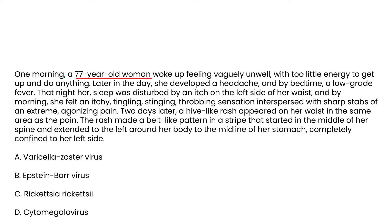Clinical vignette one: A 77-year-old woman woke up feeling vaguely unwell, later developed a headache, and by bedtime a low-grade fever. That night her sleep was disturbed by an itch on the left side of her waist, and by morning she felt an itchy, tingling, stinging, throbbing sensation interspersed with sharp stabs of extreme agonizing pain. Two days later, a hive-like rash appeared on her waist in the same area as the pain, forming a belt-like stripe from the middle of her spine around the left side to the midline of her stomach, completely confined to the left side.